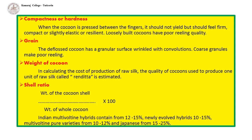Weight of cocoon: In calculating the cost of production of raw silk, the quantity of cocoons used to produce a unit of raw silk — called rendita — is estimated. The price of cocoons is adjusted according to the estimated number of cocoons used for one rendita.